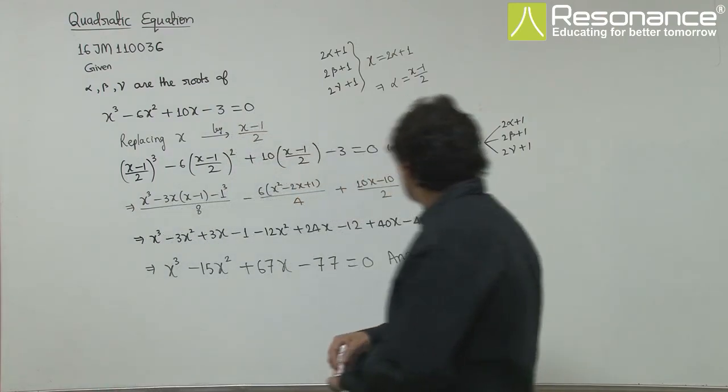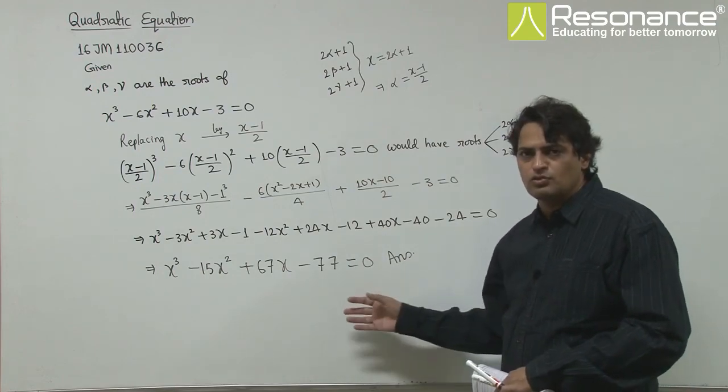So this is the answer. This equation has roots 2α+1, 2β+1, 2γ+1.